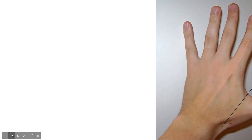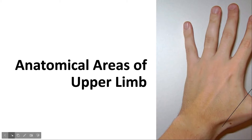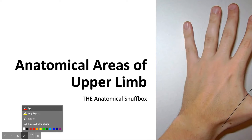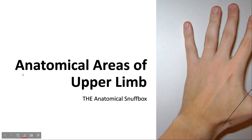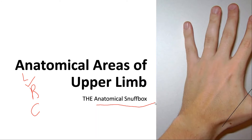In this video we will learn another anatomical area of the upper limb, which is the anatomical snuffbox. We will see its location, its borders, and its contents. Let's get started and see why the anatomical snuffbox is called a snuffbox. All these points will be covered in a single video, so keep watching till the end.